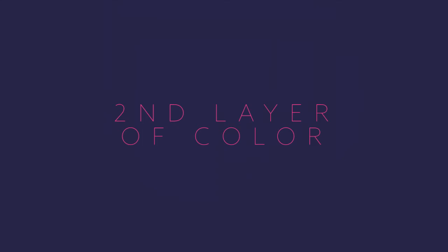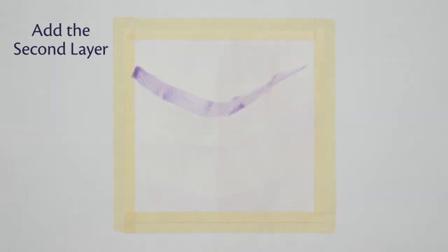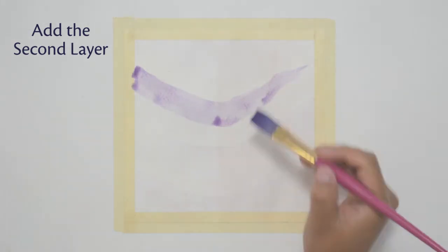Second layer of color. This layer should be a bit darker and more intense than the first one. For that, I mix the same colors again, but this time I add less water.